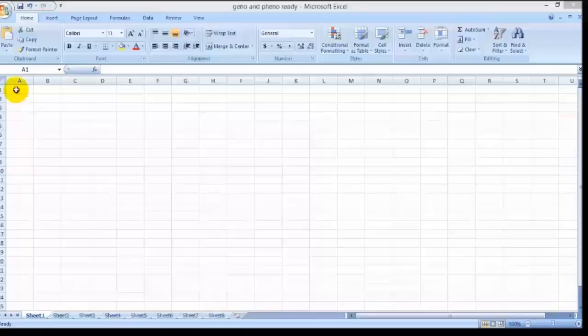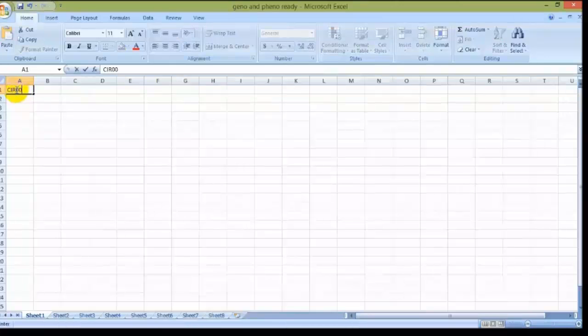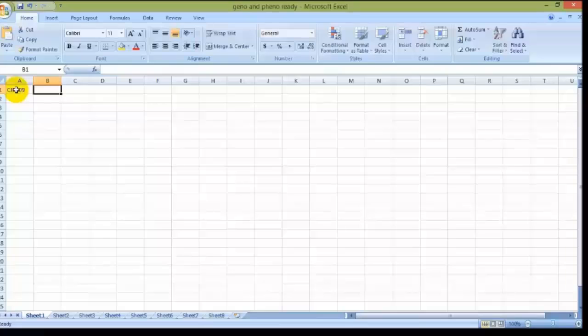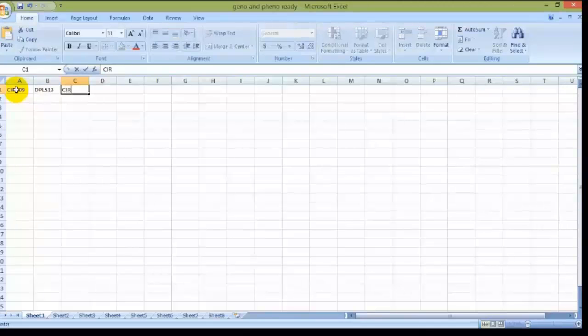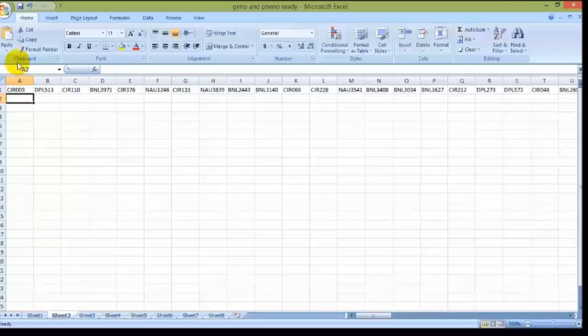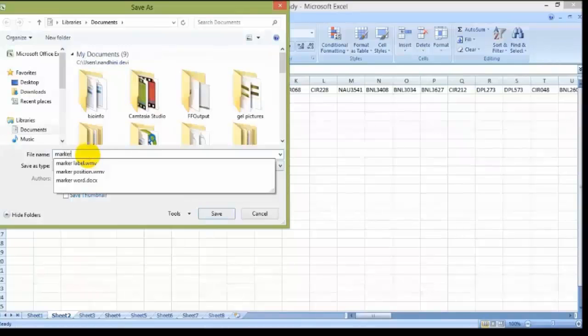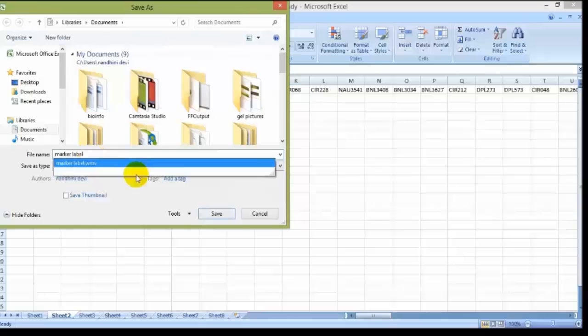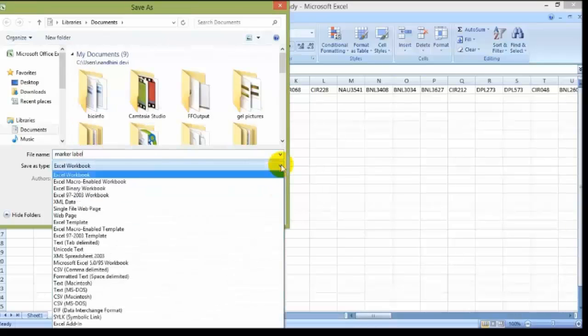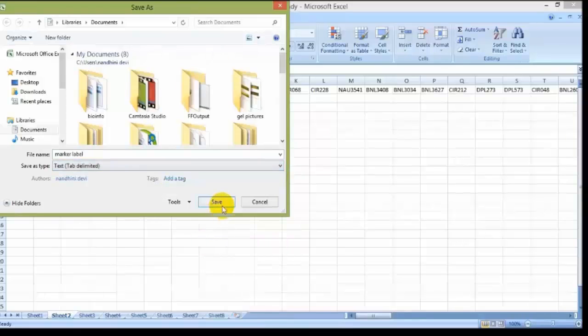The next step in data file preparation is marker labeling. In a new Excel sheet, the marker labels were entered in the first row. The order of the markers was started from first marker of chromosome 1 to last marker of chromosome 1, and this has to be repeated for all chromosomes. We are saving this Excel file in the name of marker label with the extension of .txt file format.